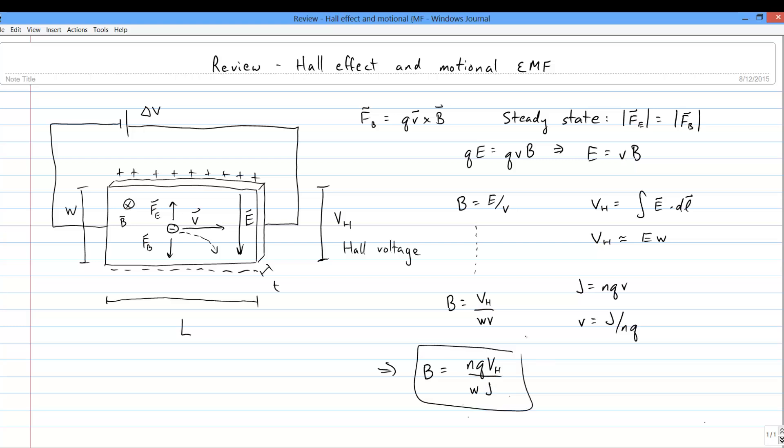Since voltages and currents are easy to measure, and charge carrier density is easy to look up, this gives us a quick and easy way to measure B.